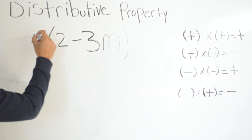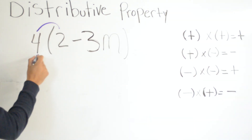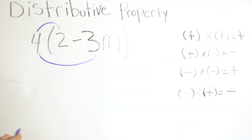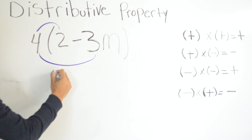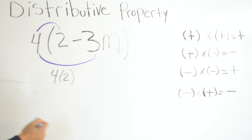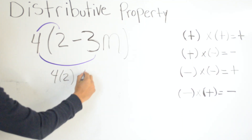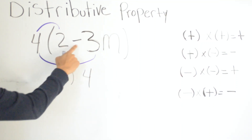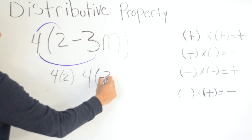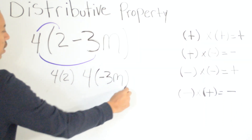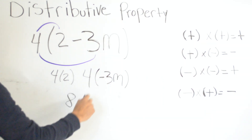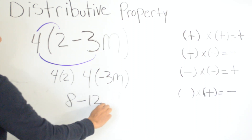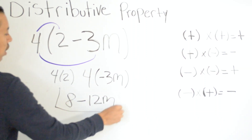First we'll be multiplying four times two, and then we'll be multiplying four times negative three. So four times two is eight, and four times negative three is negative twelve. So that will be our answer: eight minus twelve.